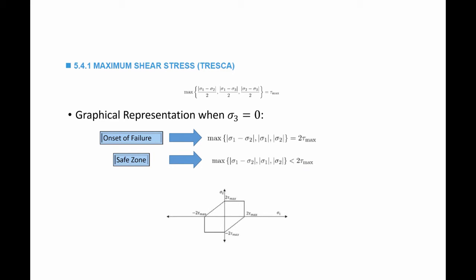The safe zone is if the maximum of these values is less than 2 tau max. If I want to graphically look at this in a coordinate system made by sigma 1 and sigma 2, the onset of failure is represented by this line. Any stress state represented by a point on this line means that it's the onset of failure. Any point inside satisfies that the maximum is less than 2 tau max, which is the safe zone.